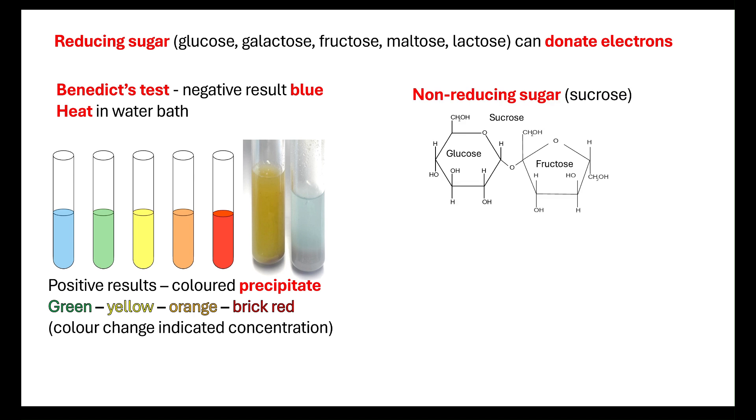If we use a non-reducing sugar like sucrose, we will need to do the Benedict's test and we will get a negative result. The blue will stay blue even when you heat it in the water bath. What you need to do is take your sample and heat it with hydrochloric acid. That's going to break the glycosidic bond between the glucose and the fructose, releasing those monomers.